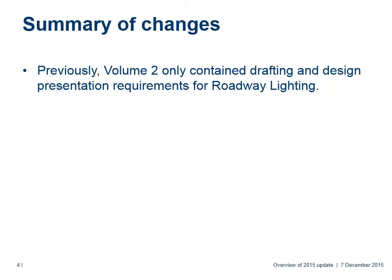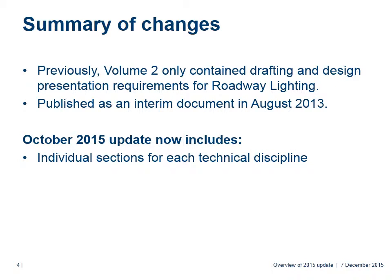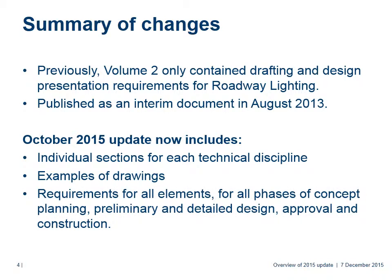Previously, Volume 2 only contained drafting and design presentation requirements for roadway lighting. It was published as an interim document in August 2013. The October 2015 update now contains individual sections for each technical discipline. It provides numerous examples of drawings which show typical Transport and Main Roads drafting and presentation requirements for all elements and phases of concept planning, preliminary and detailed design, approval and construction.